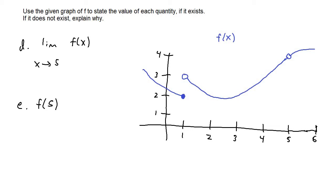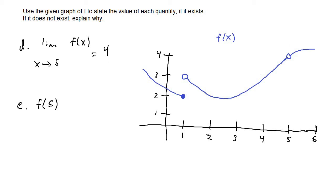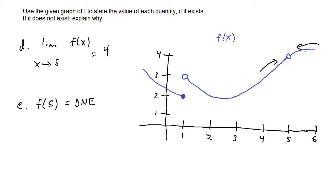For letter d, we have the limit of f of x as x approaches five. Looking at the graph, as f of x approaches the x value of five from both the left-hand side and the right-hand side, both approach a y value of four. So the limit of f of x as x approaches five equals four. For letter e, we have f of five — not a limit, just the value when we plug in five. At x equals five there is a hole and the function is not defined there, so f of five does not exist.